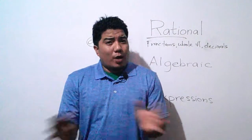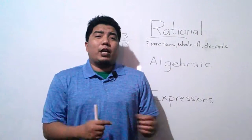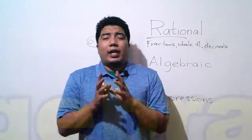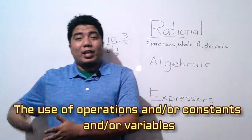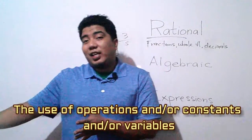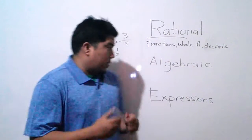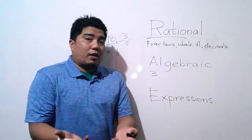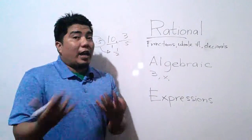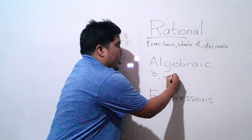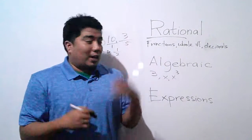Now let's go to the word algebraic. The root word is algebra, which is the use of constants — fixed numbers — and variables, which are letters from A to Z that can be represented by any other values. Examples include the number 3 as a constant, the letter X as a variable, and X cubed as an algebraic expression with an exponent.